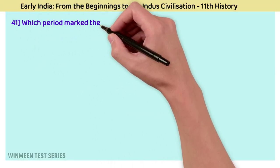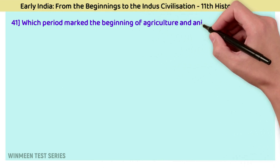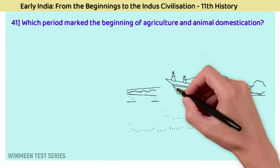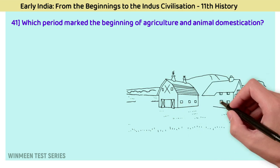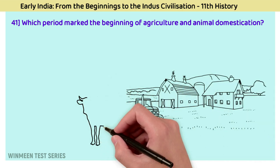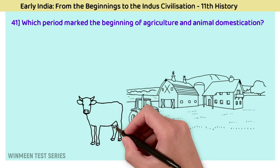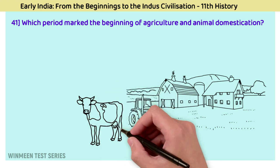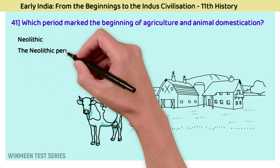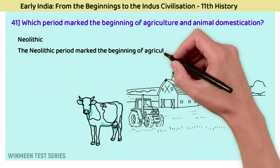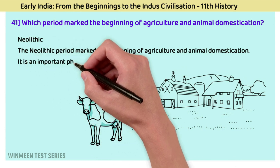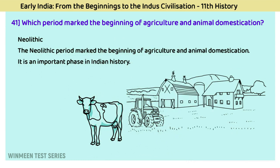Question 41: Which period marked the beginning of agriculture and animal domestication? The answer is the Neolithic. The Neolithic period marked the beginning of agriculture and animal domestication, making it an important phase in Indian history.